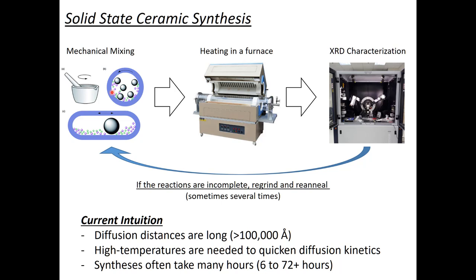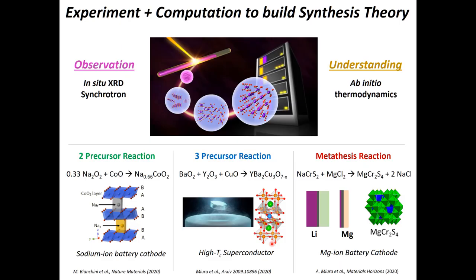The general intuition regarding ceramic synthesis is that because powders have diffusion distances of several hundred thousand angstroms, you need very high temperatures and synthesis times of six to seventy-two hours to facilitate diffusion kinetics. What I'm going to show today is that much of this intuition is not necessarily true—reactions can be very fast if you design the precursors and reaction conditions in a special way. I'll demonstrate this through a combination of experiment and computation.